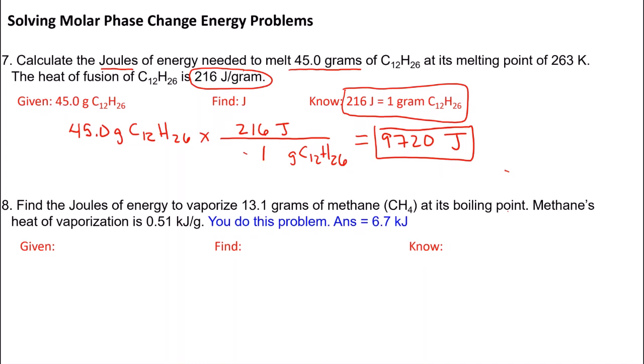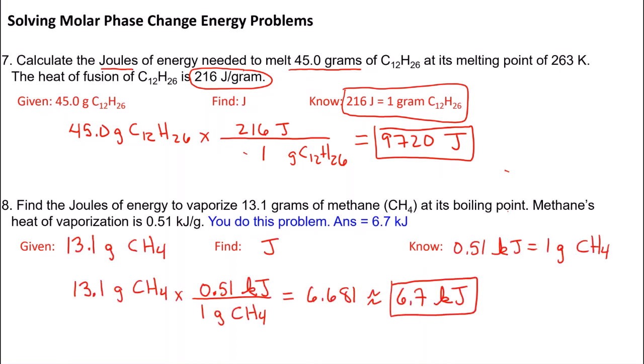Last problem for you to work. Find the joules of energy to vaporize 13.1 grams of methane, CH4, at its boiling point. Methane's heat of vaporization is 0.51 kilojoules per gram. Pause the video and work the problem. Hopefully you got the right answer and realized that unit cancellation was very easy because you just use 0.51 kilojoules per 1 gram — you did not need the periodic table at all.